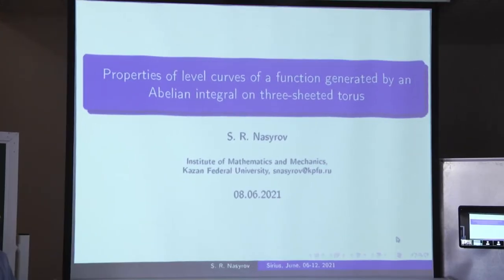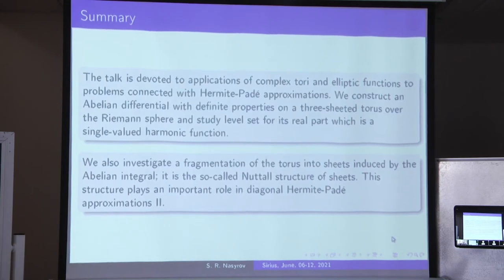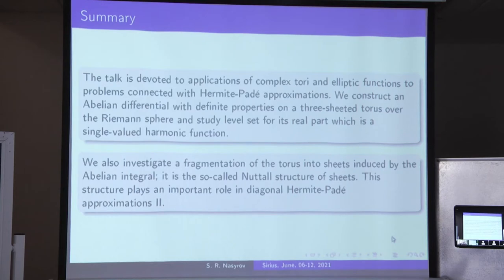I would like to talk about some properties of an abelian integral on a three-sheeted torus. The talk is devoted to the application of complex analysis and elliptic functions to some problem connected with Hermite-Padé approximation. We construct an abelian differential with some definite properties on a three-sheeted torus over the Riemann sphere, and study level sets of some harmonic function connected with this abelian differential, and investigate the fragmentation of the torus into three sheets.